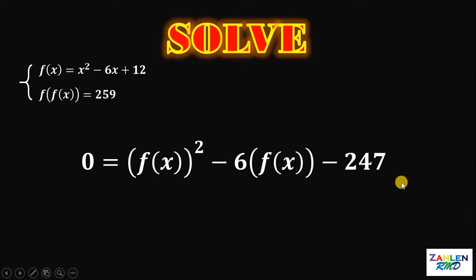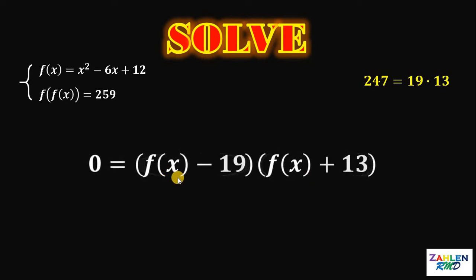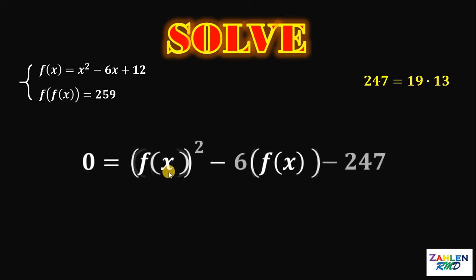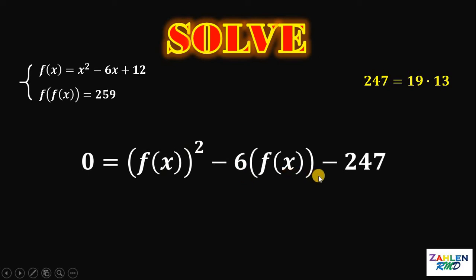Now, 247 is equivalent to 19 times 13, and 19 minus 13 will give us 6. Therefore, we can factor this expression on the right-hand side as f of x minus 19 multiplied by f of x plus 13. If we multiply these factors, we will go back to our previous expression: f of x quantity squared minus 6 times f of x minus 247.